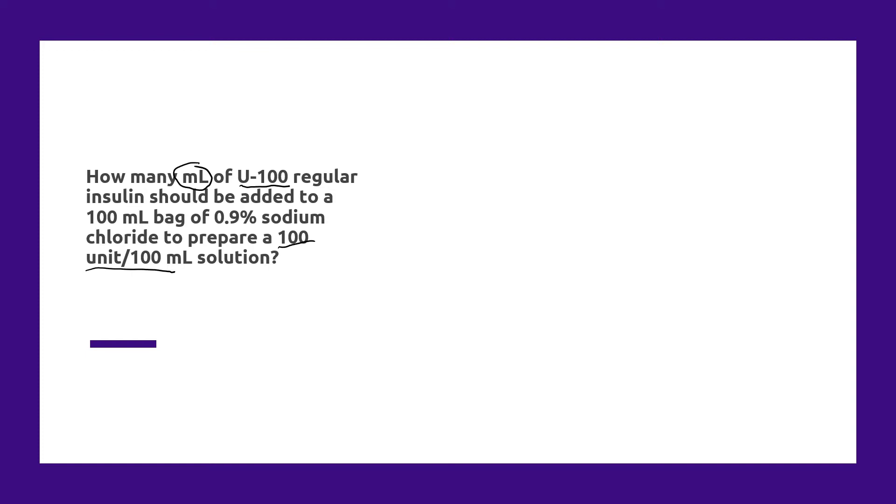Now the first thing you need to know to be able to solve this is what U-100 means. When insulin concentration is expressed, it's expressed as a U and a dash followed by a number. That number indicates how many units there are in one milliliter of that insulin product.